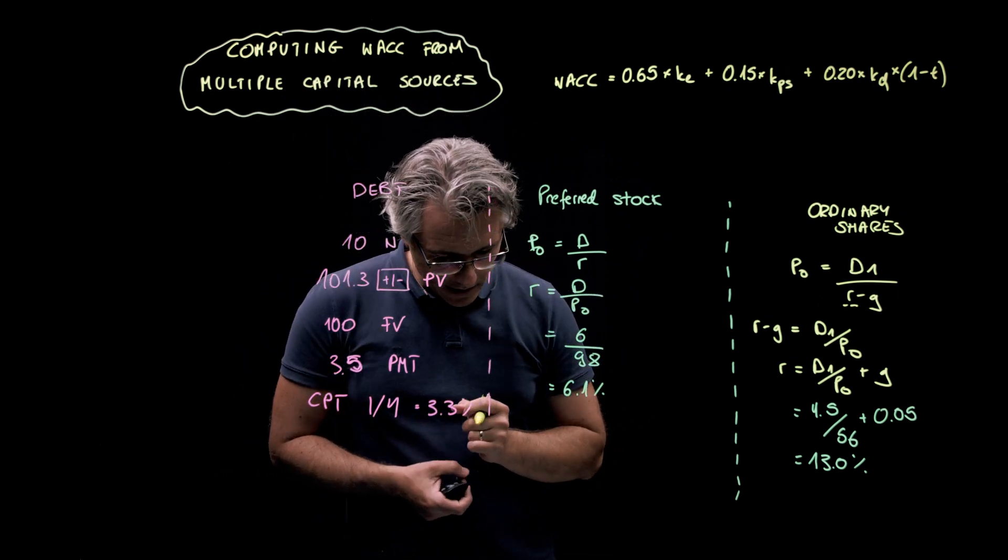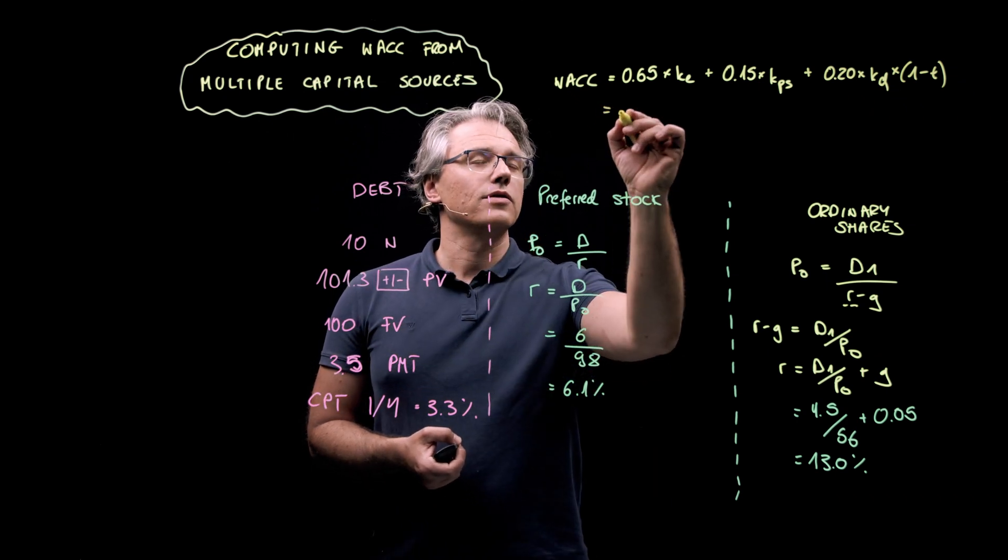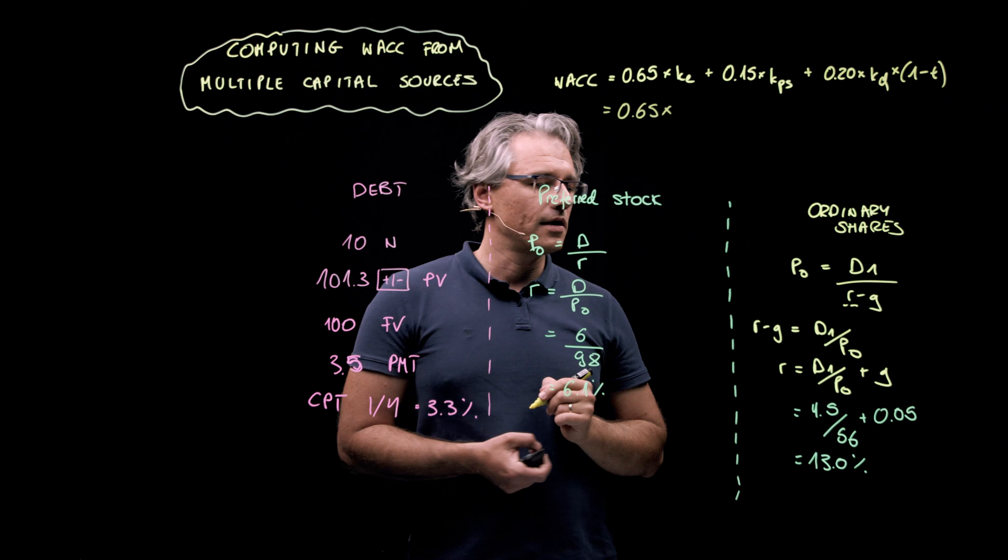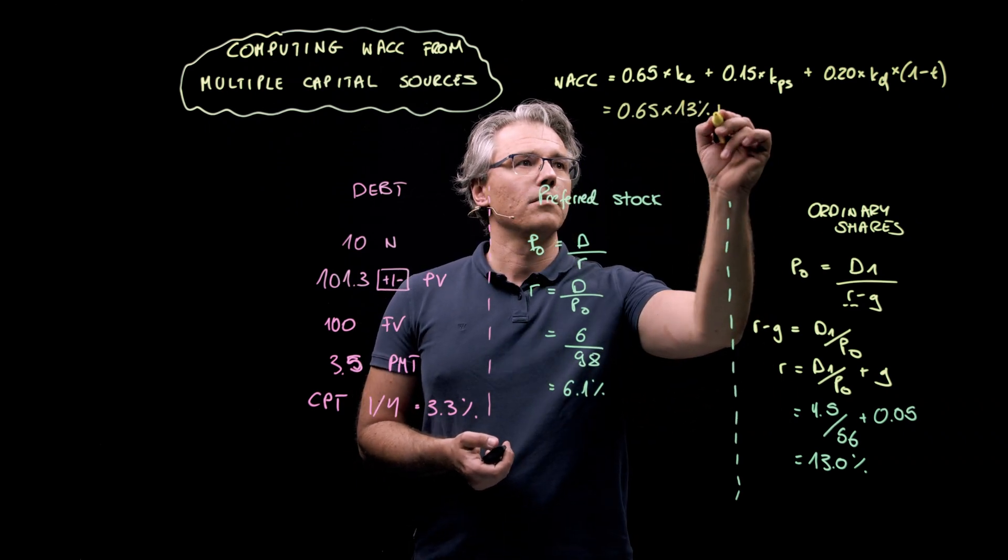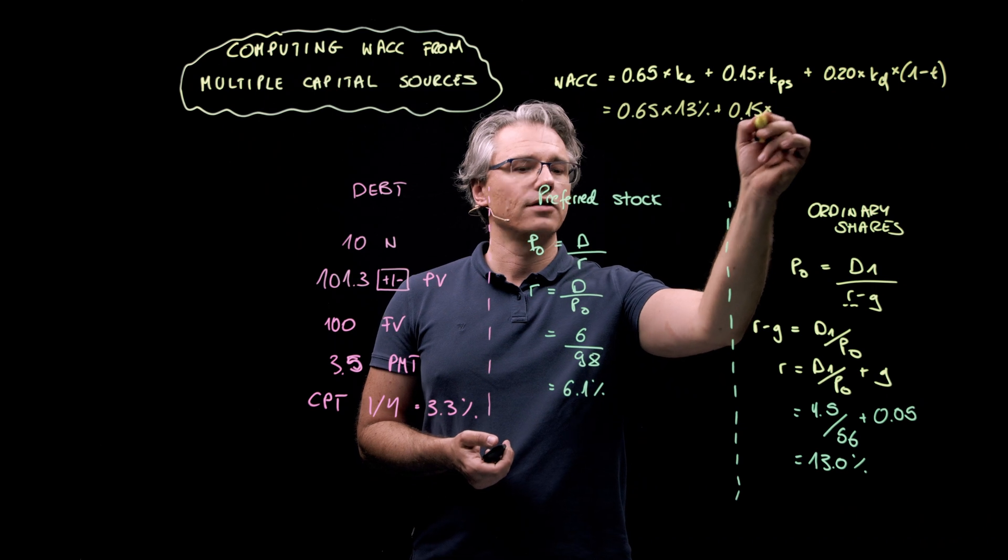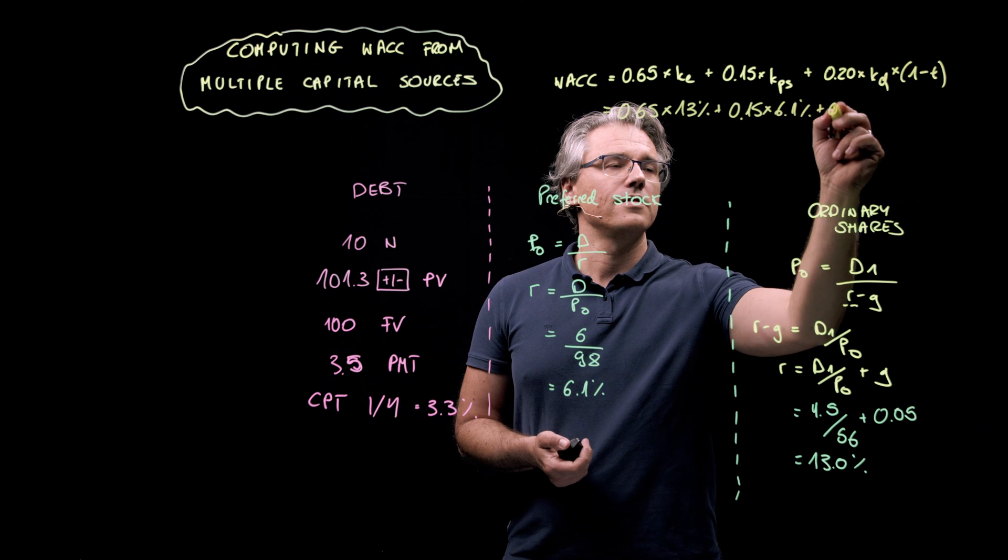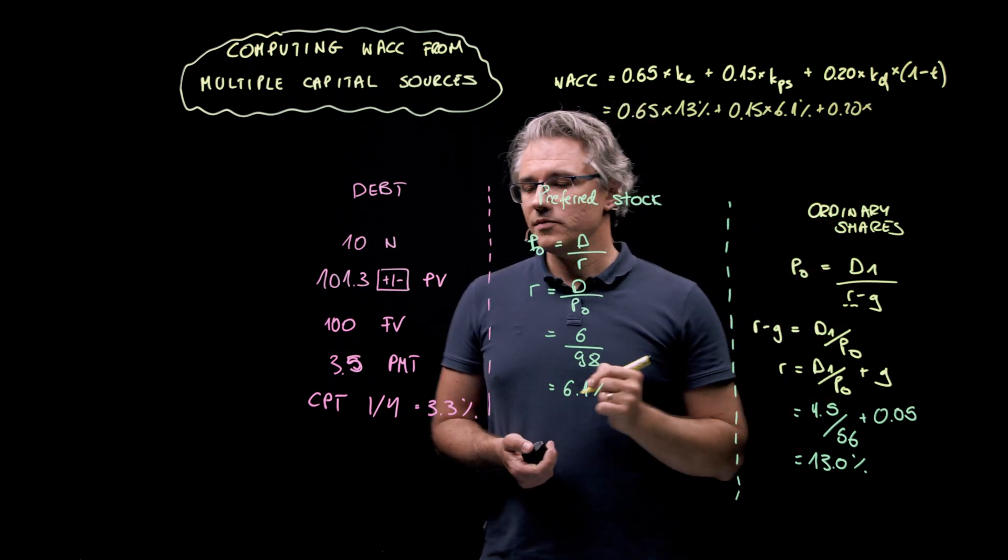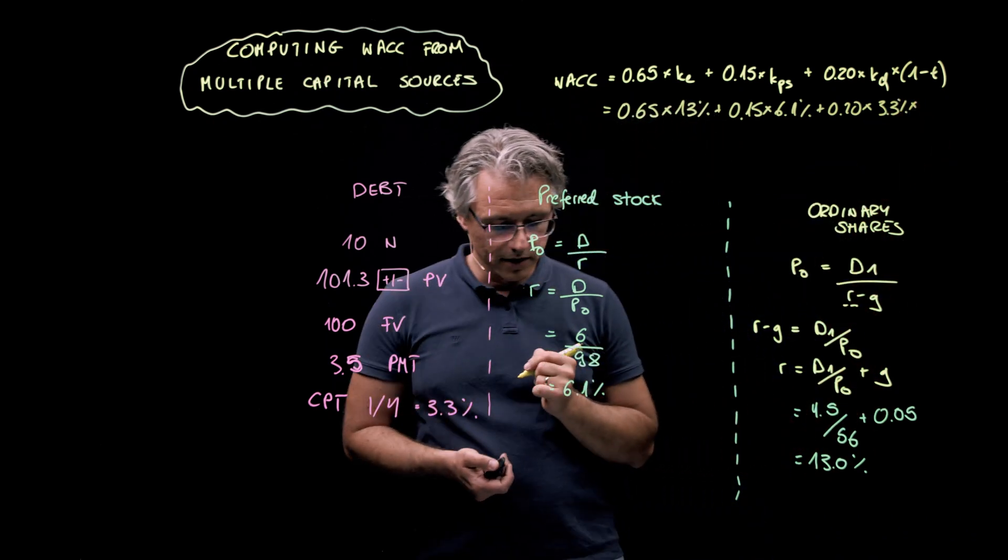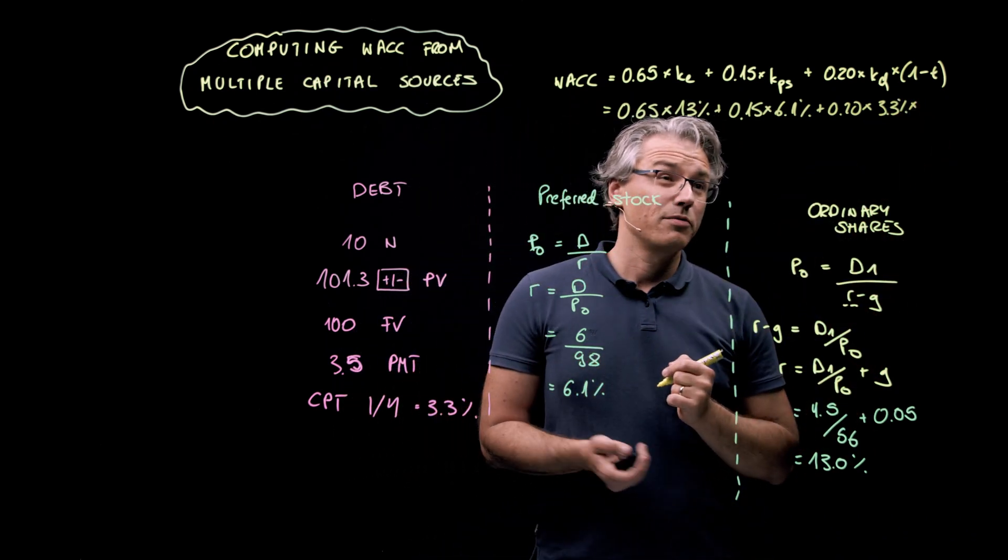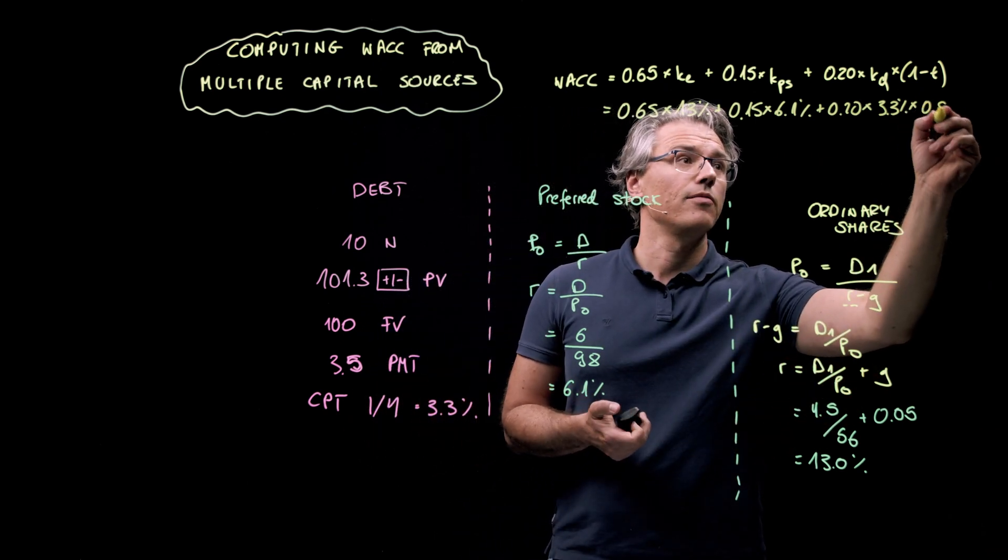Now, let's put in the additional numbers over here. So, I've got 0.65 times the cost of equity, 13%, plus 0.15 times the cost of preferred shares. That was 6.1%, and 0.20 times the cost of debt, 3.3%, but multiplied by 1 minus the tax rate. Well, the tax rate provided in the question was 20%. So, 1 minus that is 0.8.